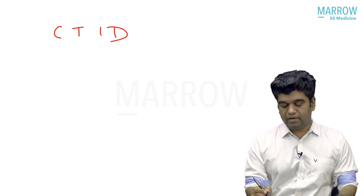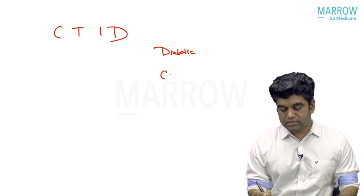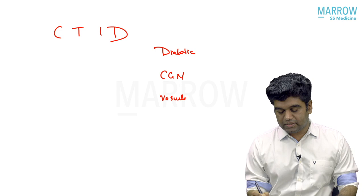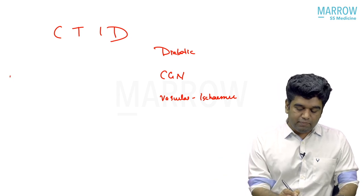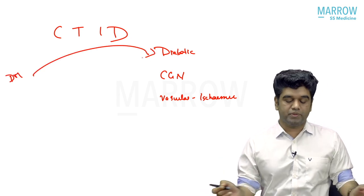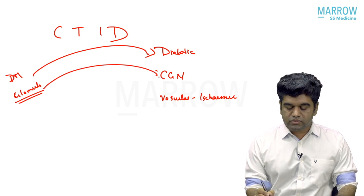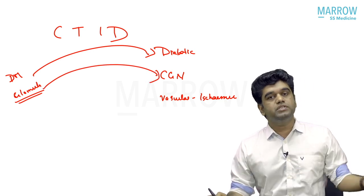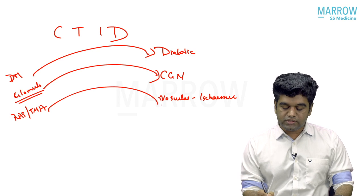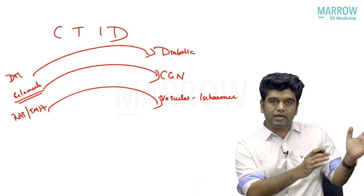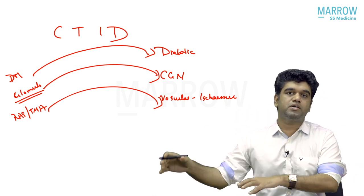The most common cause of CKD is diabetic nephropathy, the second most common is chronic glomerular nephritis, and the third is vascular or ischemic nephropathy. Diabetic patients over time develop diabetic nephropathy. Glomerular diseases including membranous, FSGS, MPGN, and IGA can over time go to CKD, called chronic glomerular nephritis. RAS and TMA patients can go to CKD, called ischemic nephropathy.